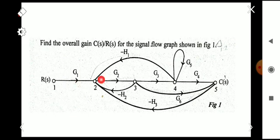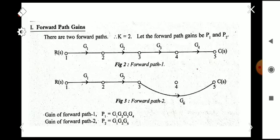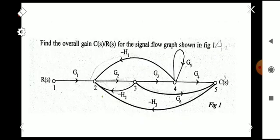Absolute care is needed while copying the figure from the question paper. The first step is to find the forward path gains. The first forward path starts from node 1: g1, g2, g3, g4. The next forward path is g1, g2, and g6.